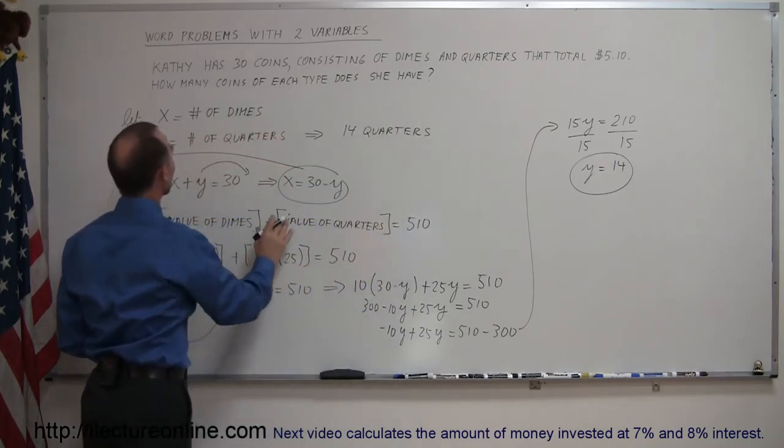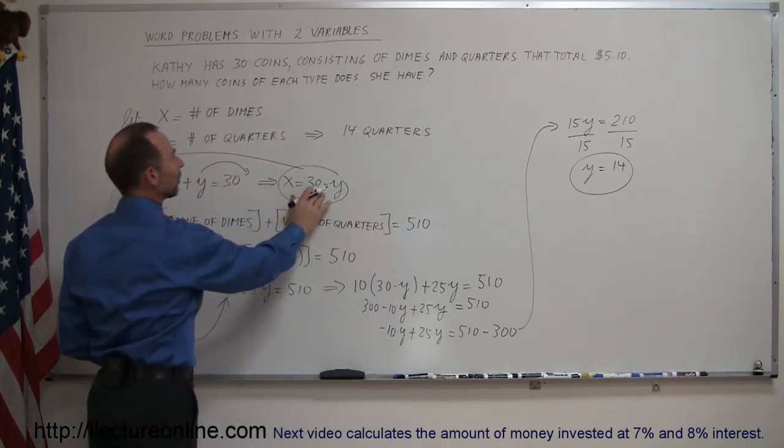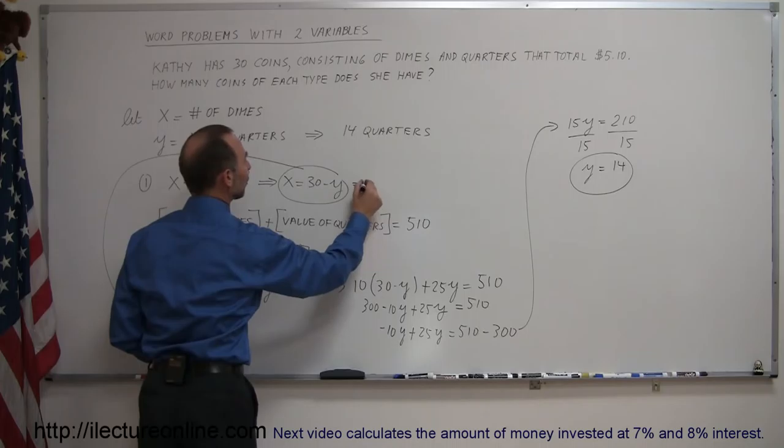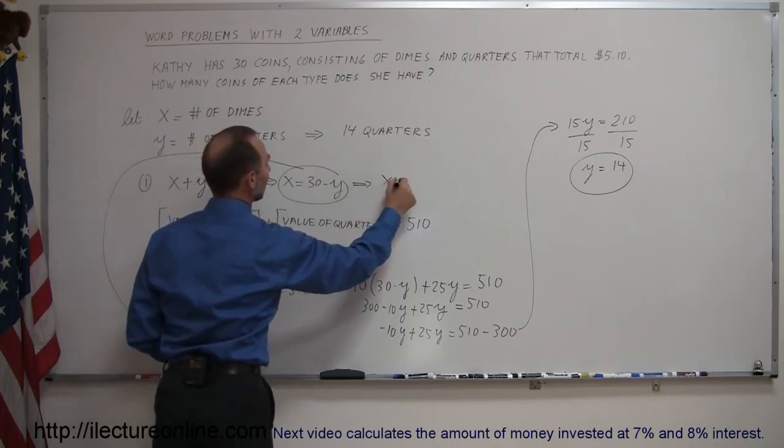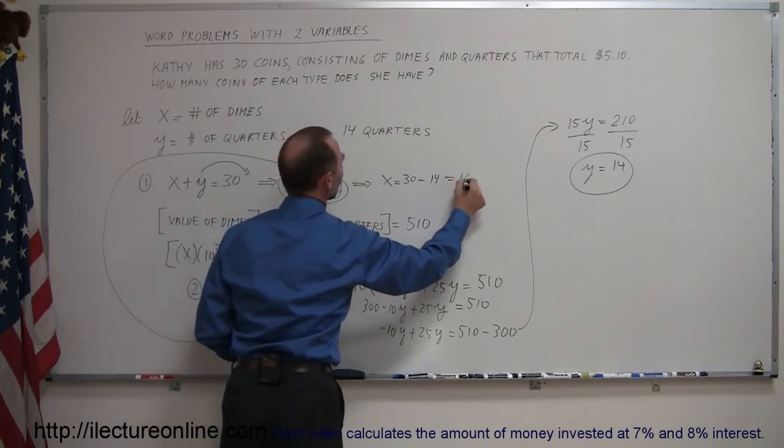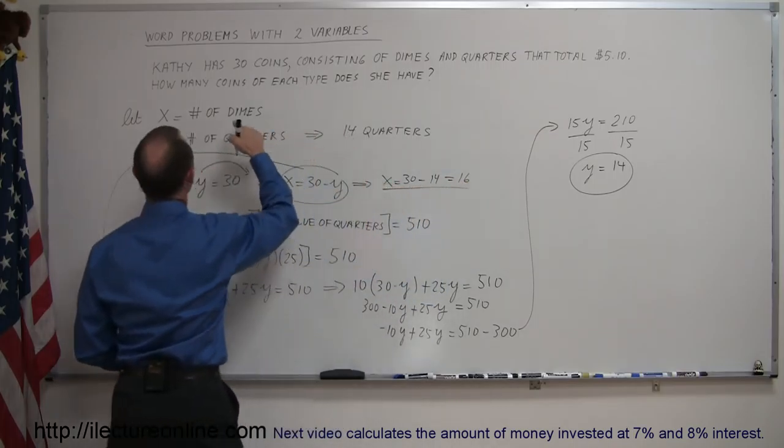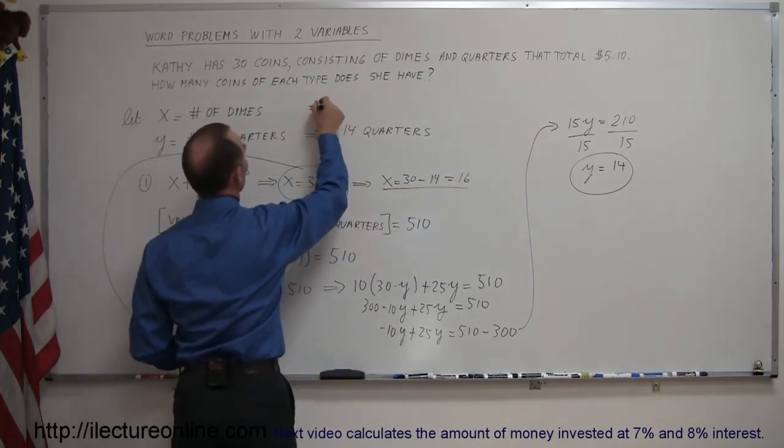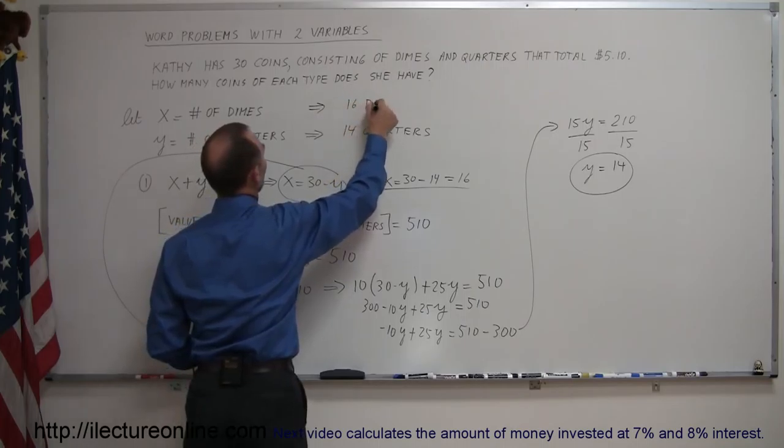Now since we have the number of dimes expressed in terms of the number of quarters, we can use this equation to say that x is equal to 30 minus 14, which is equal to 16, which x represents the number of dimes, so we can say that we have 16 dimes.